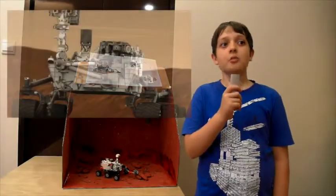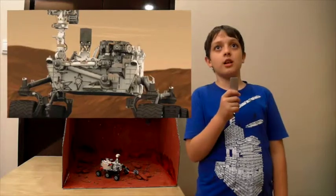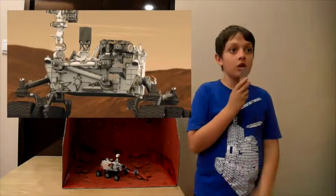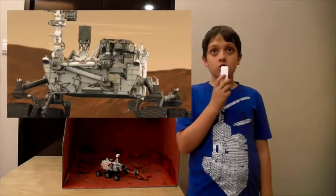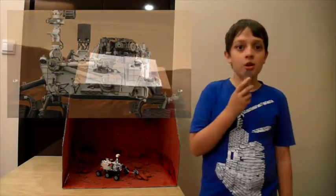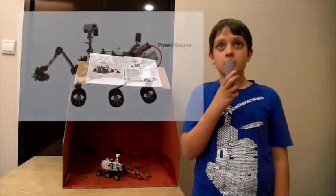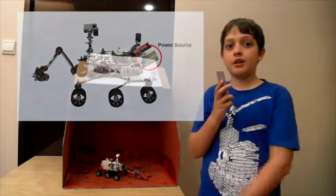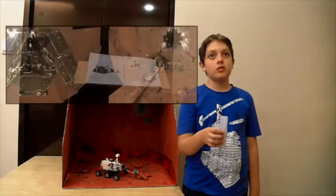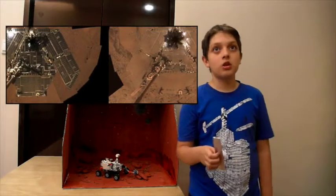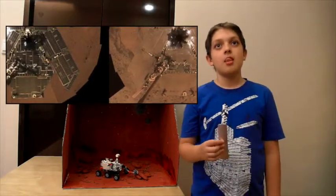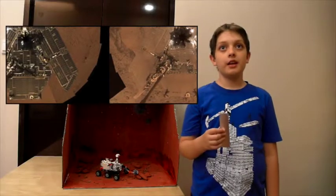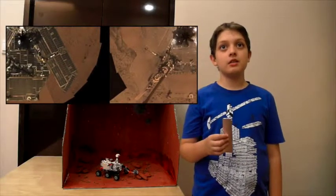Curiosity landed on Mars in 2011. Curiosity does not have a solar panel. Curiosity has a nuclear battery. Older Mars rovers have solar panels. Solar panels can be a problem because they can get dusty.